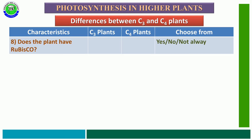The eighth characteristic feature is: does the plant have RuBisCO? The options are yes, no, or not always. In both C3 and C4 plants, both consist of the RuBisCO enzyme for photosynthesis.